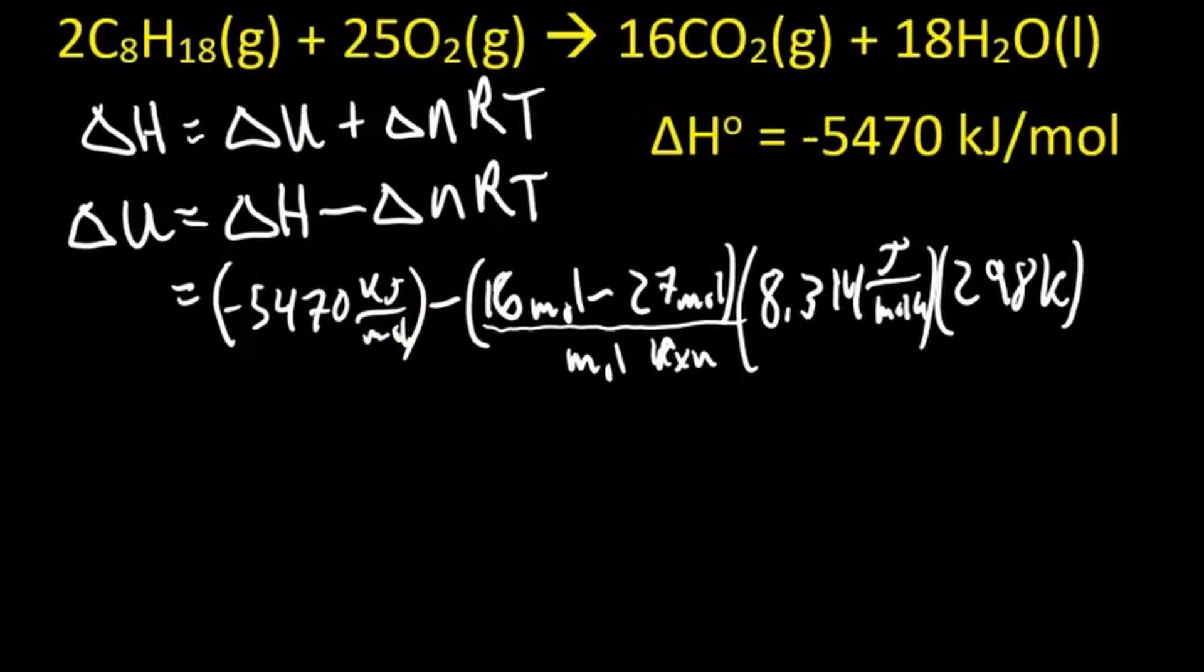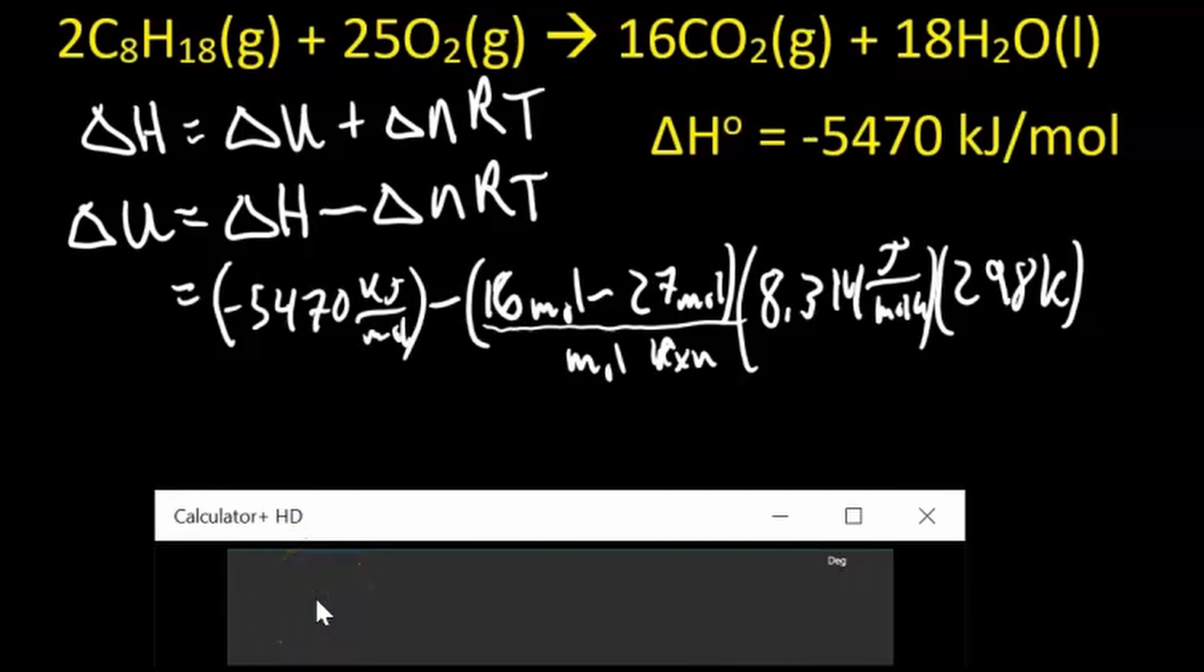R, we want the R that has joules in it: 8.314 joules per mole Kelvin, and the temperature is 298 Kelvin. So we'll plug that into our calculator. Actually, what I'm going to do, I'm going to do the second term first, because the second term gives us the work. So 16 minus 27 times 8.314 times 298, that's negative.